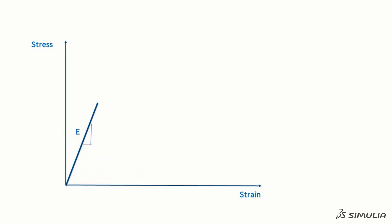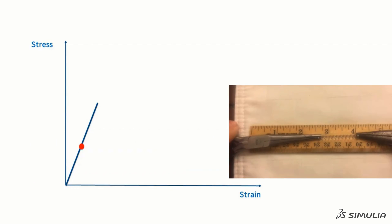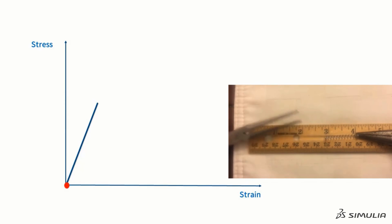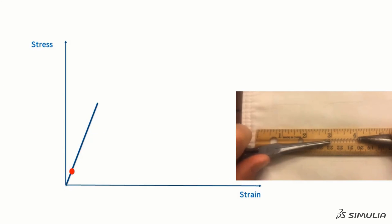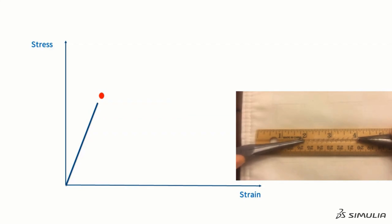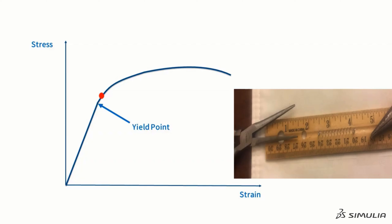Let's start with the plot of stress and strain and the spring from a ballpoint pen. If we pull on the spring and then release it, we will move up and down the same straight line. After we completely release the load, the stress and strain both return to zero and the spring returns to its original length. If instead of unloading the spring we continue to pull on it, and pull on it too much, it does not return to its original shape. This is due to the fact that at a certain level of stress, the relationship between stress and strain stops being linear. We call the point where this happens the yield point.